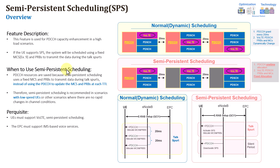Usually, this is a scenario-based feature. You can enable it in very particular scenarios whenever you have very high PDCCH congestion, and also for scenarios where you are not expecting a lot of variation in radio condition. For example, let's assume you have one indoor site or IPS site where you know the area is very well covered. So you can enable the feature for this site — this is just an example; every network will have different behavior.